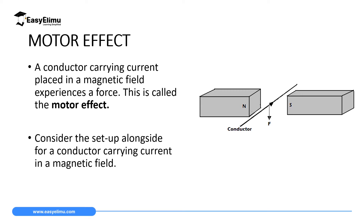If you have a current-carrying conductor, remember it has a magnetic field around it. If you take it and place it inside an external magnetic field — for example, using two permanent magnets with a north pole and a south pole — this conductor is going to experience a force. In the case shown on screen, it experiences a downward force. But why downwards and not upwards?